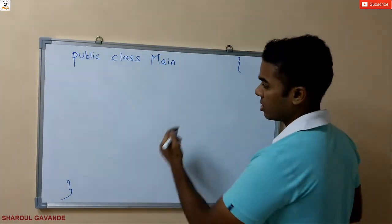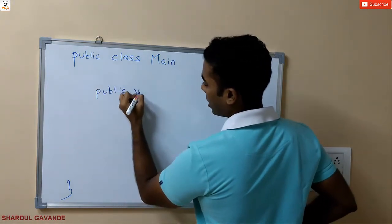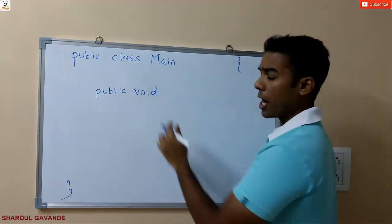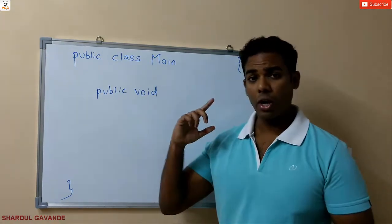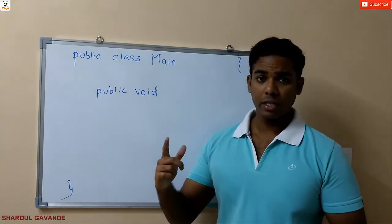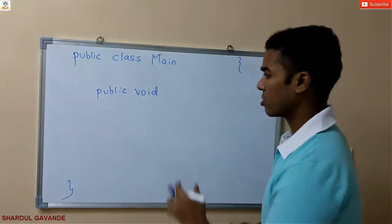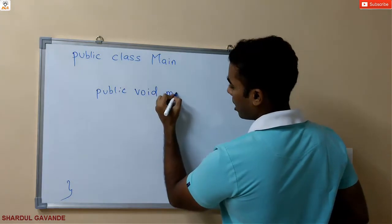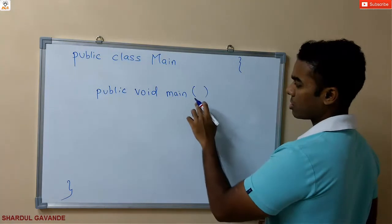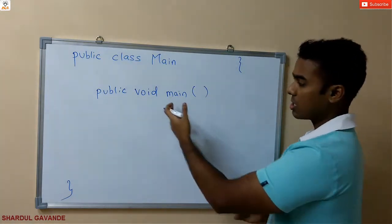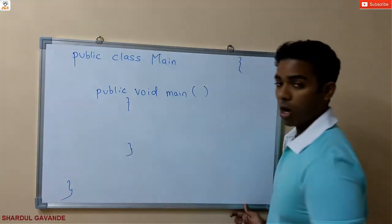Let's name it the main method. I will write public void, because I don't want to return anything — that is the reason I am writing void. As you know, whenever your code is executed, your main method is the method which gets called, so it should obviously not return anything. So I will write public void main — this is the name of my method — and opening and closing of my method.